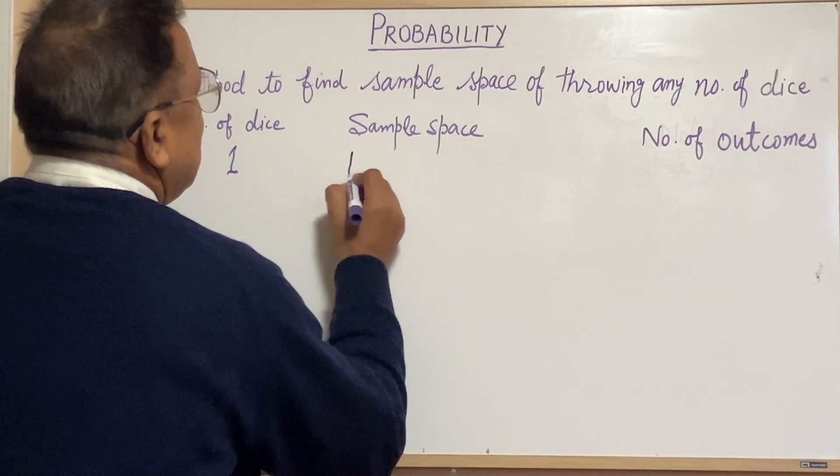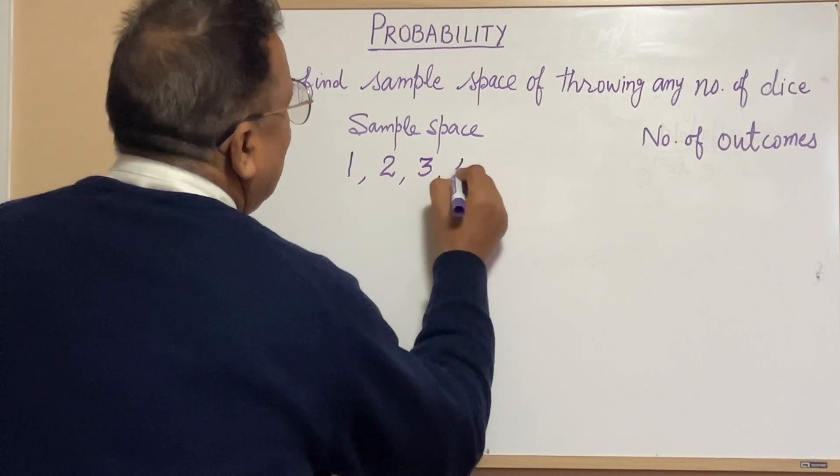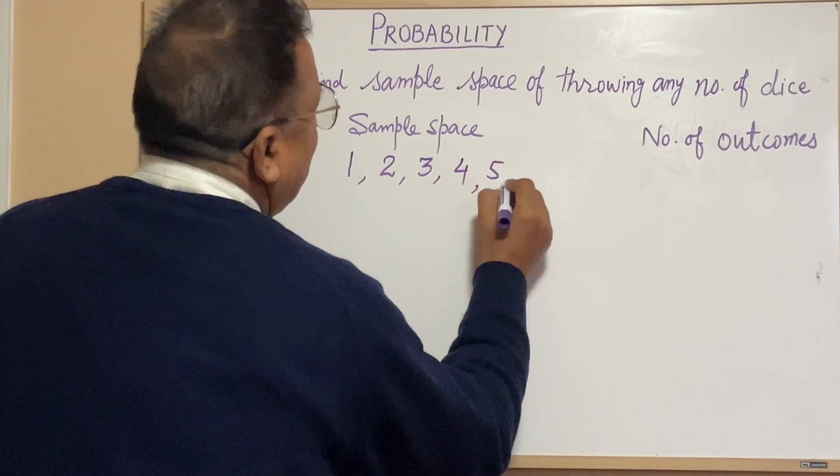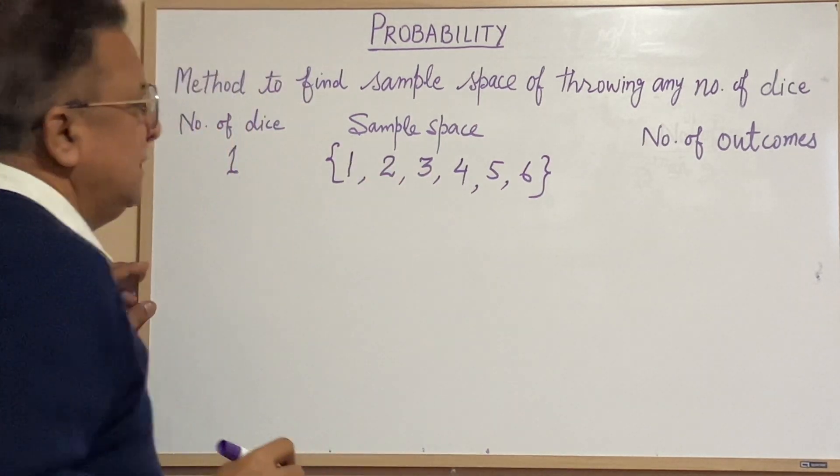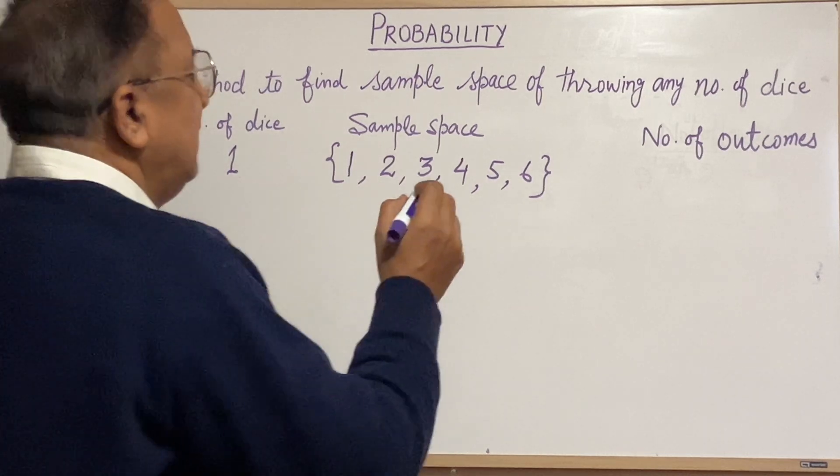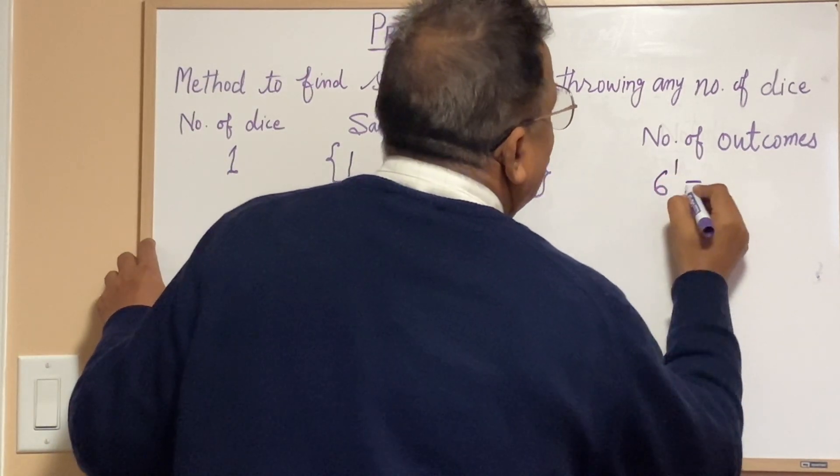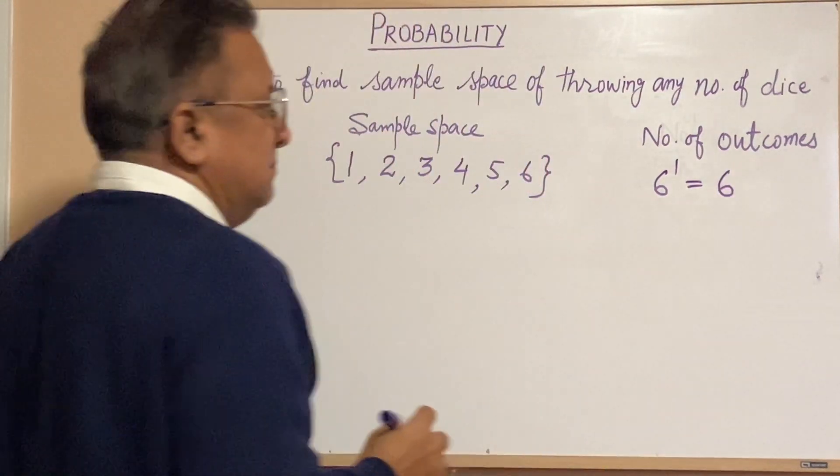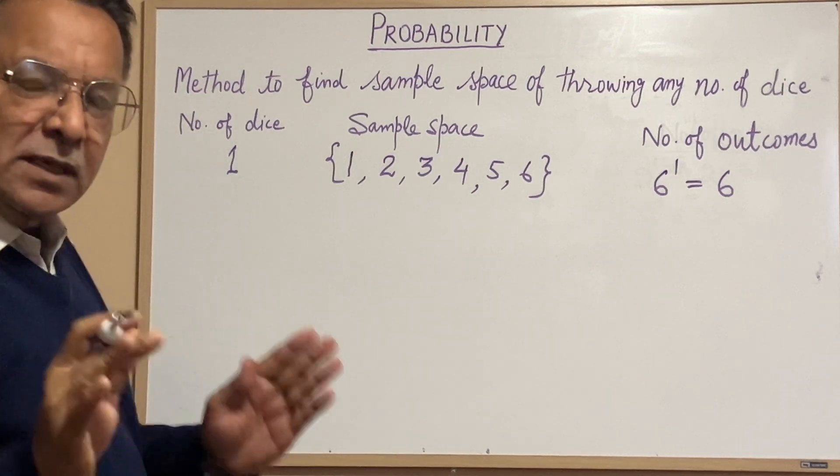What is the sample space? One, two, three, four, five, six. This is the sample space for throwing one dice. Number of outcomes: six raised to power one. It is six.